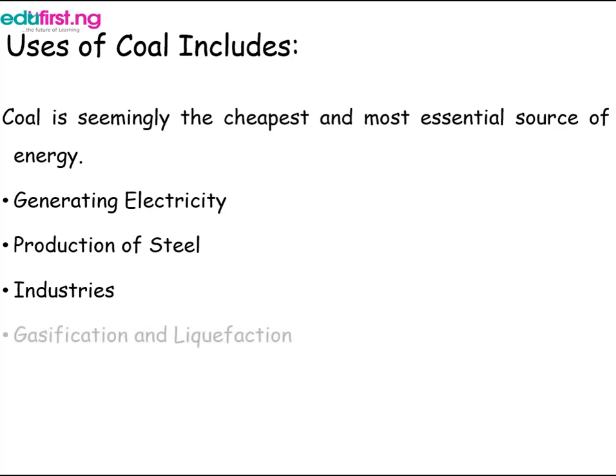The next use of coal is gasification and liquefaction. Coal has been turned into synthetic gas with a mixture of carbon monoxide (CO) and hydrogen. This chemical produced from coal is used primarily to make other products, and most products out there in the market have coal or coal byproducts.